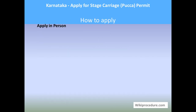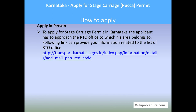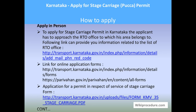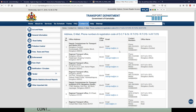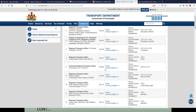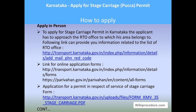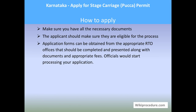Now let us see how to apply in person. A stage carriage permit can be obtained directly from the RTO office concerned for your area. If you don't know the address of your RTO office, use the link provided here to reach the contact page of the Karnataka State Transport Portal and find out the applicable RTO office address. Note it down and proceed. The application form can be downloaded using the link provided — please download, print, and complete it before applying. Make sure you have all the necessary documents, as a missing document will result in your application being rejected.